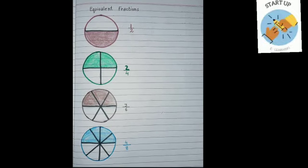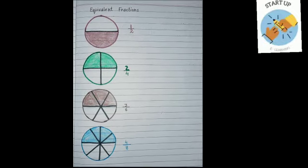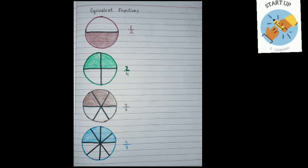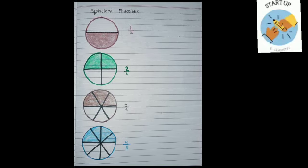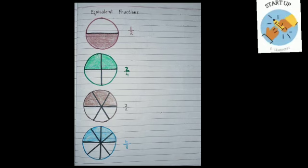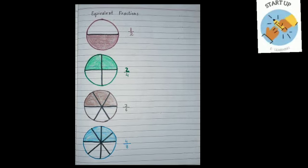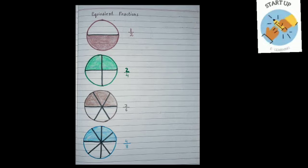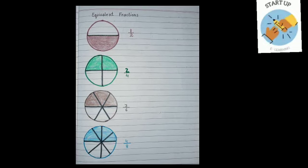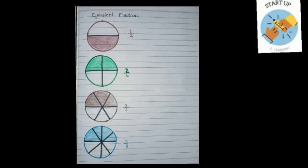Here, as you all can see, all the circles are of the same size. The shaded portions in all the circles are also equal. They represent the same part of the whole. So, it means half, two fourths, three sixths, and four eighths represent half of the circle.